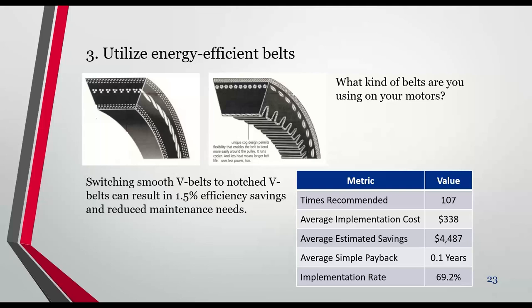For energy-efficient belts: switching from smooth V-belts to notch V-belts can result in up to almost 2% efficiency savings, and it also helps with maintenance. This is a pretty easy one since you're going to have to replace belts anyway. Switching from smooth belts to notch belts can result in cost savings and reduced maintenance needs. For some facilities with a lot of motors, average savings can be close to $4,500 a year.